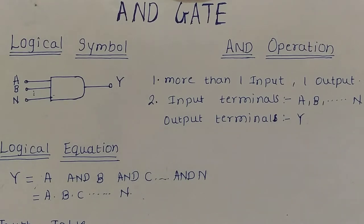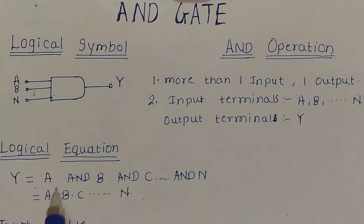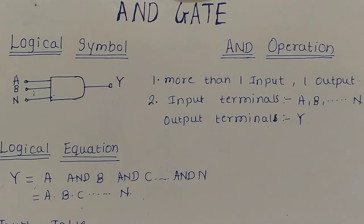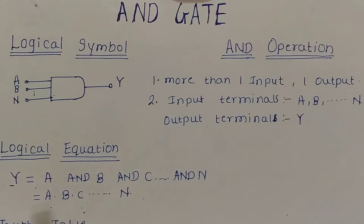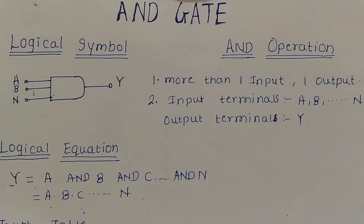The output of the AND gate is 1 if and only if all its inputs are 1. This is the mathematical logical equation of the AND gate, where A, B, C, and up to N are all input variables and Y is the output variable. These input variables are binary, meaning each variable can have only two possible values, 0 or 1, and these binary variables are also referred to as logical variables.